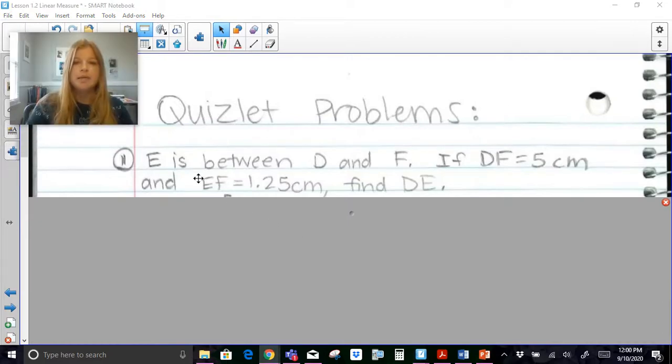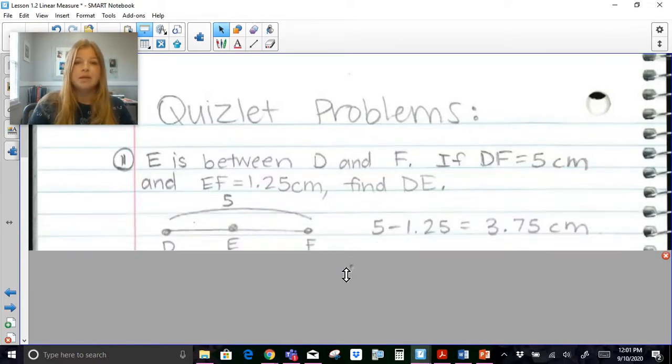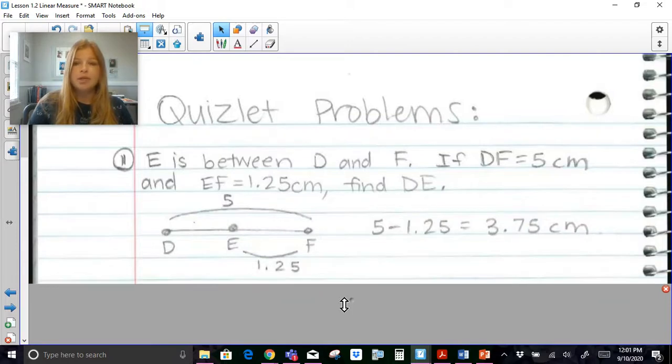So now a few problems that I want you to take a look at. E is between D and F, if DF is equal to 5 centimeters and EF is equal to 1.25 centimeters, find DE. So you can pause right now as we go through these problems or you can just simply follow along with me. This is what a diagram would look like. DF is worth 5, EF is 1.25, so to find DE you would have to subtract and it ends up becoming 3.75 centimeters.